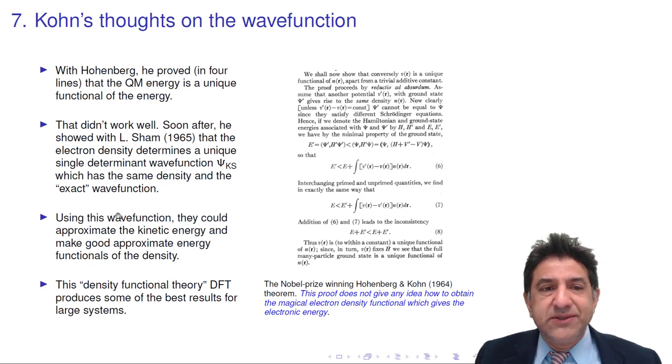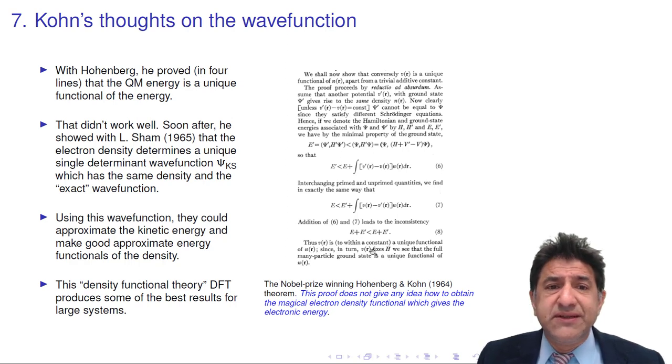Well, he went further with Hohenberg. He proved in four lines, and you can see the proof over here, that the quantum mechanical energy is a unique functional of the electron density, not the energy here as I've written, a typographical error. The quantum mechanical energy depends only on the electron density, not on the whole wave function. What a remarkable result proved in four lines here.